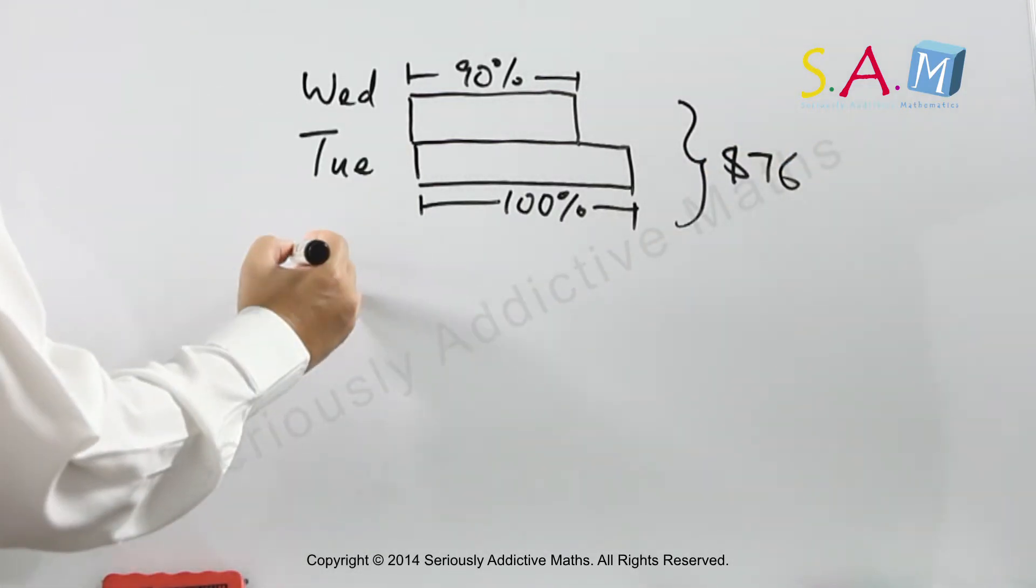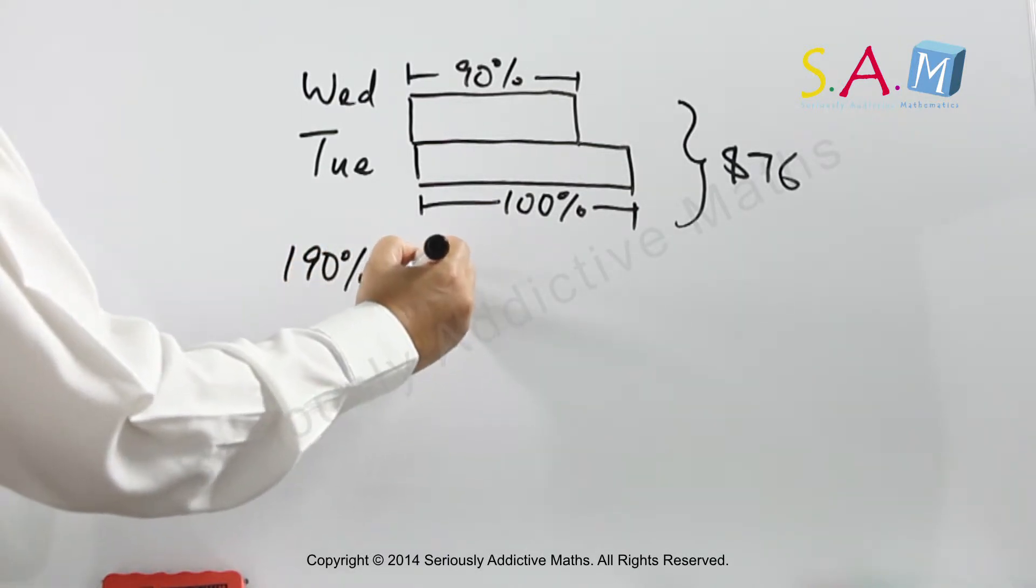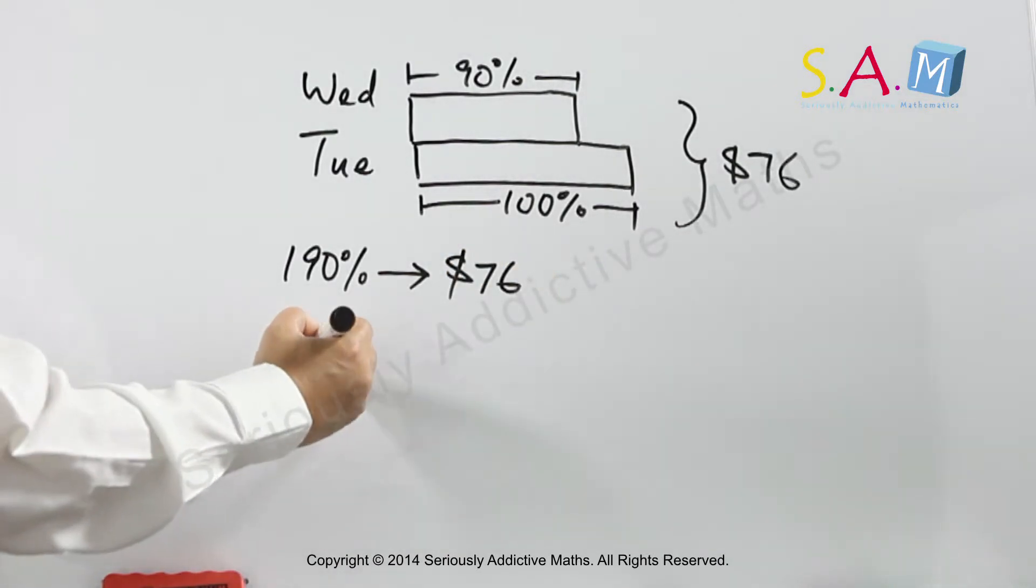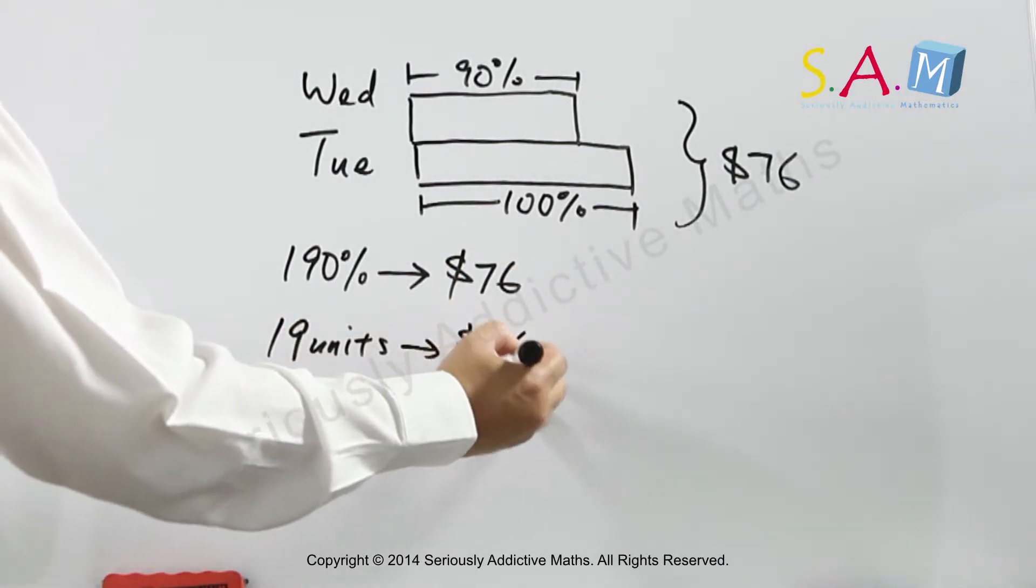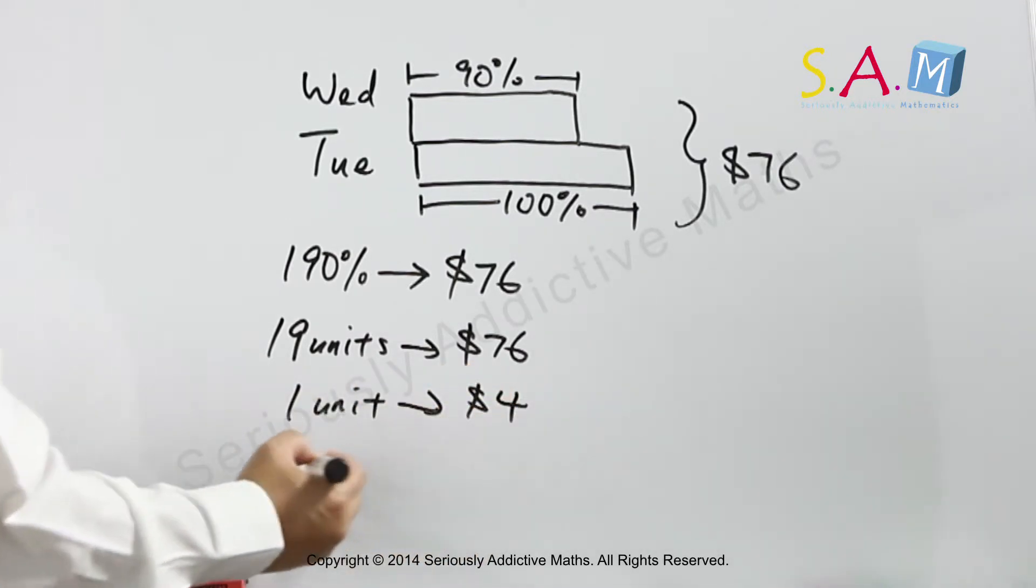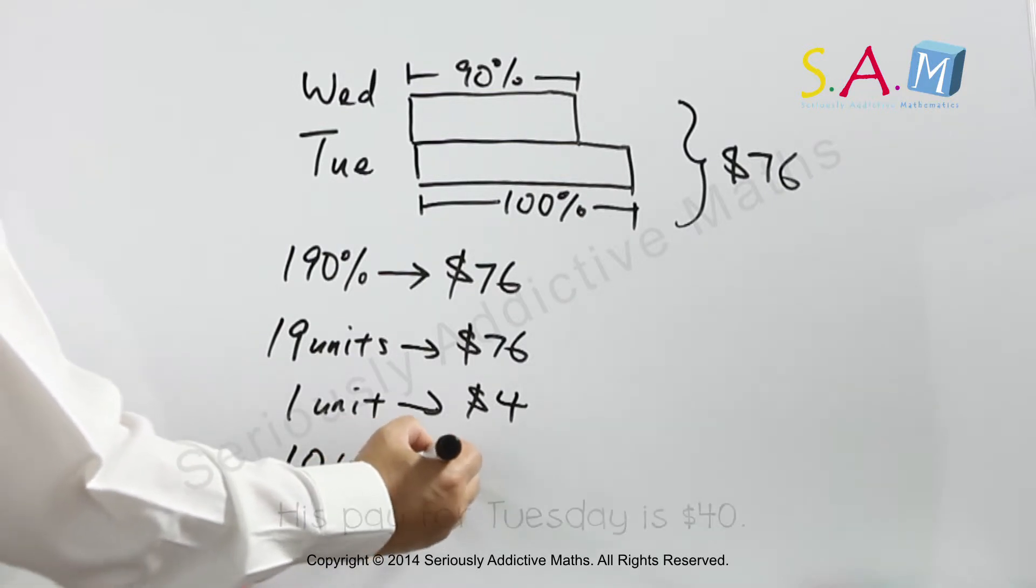So we have 190% is $76. 19 units is $76, so 1 unit is $4. Therefore, 10 units would be $40.